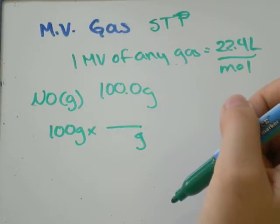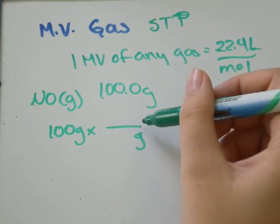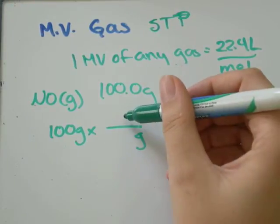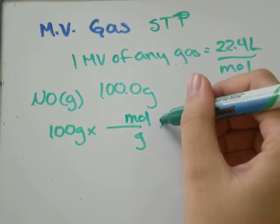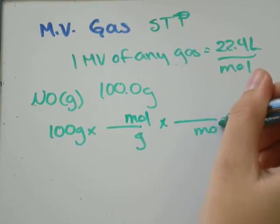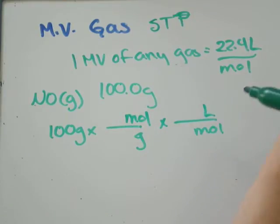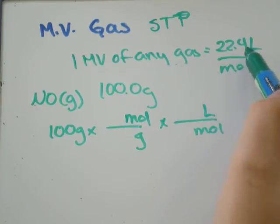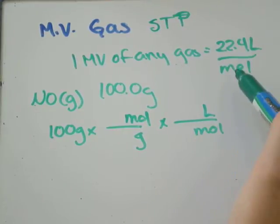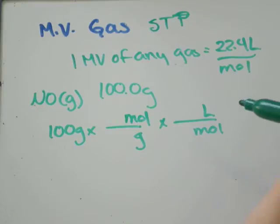So, we don't have any sort of conversion rate between grams and liters. But we do have a conversion rate between grams and moles. That's the molar mass. And mole per liter. That's molar volume of 22.4 liters for any mole at STP.